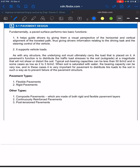Let's have our lecture video in Highway and Railroad Engineering under the topic Pavement Design. Fundamentally, a paved surface performs two basic functions. Number one, it helps guide drivers by giving them a visual perspective of the horizontal and vertical alignment of the traveled path, thus giving drivers information relating to the driving task and the steering control of the vehicle.